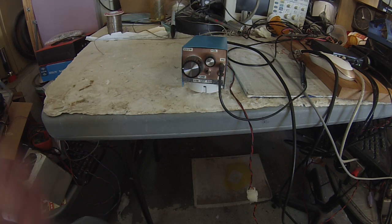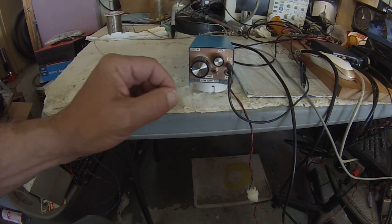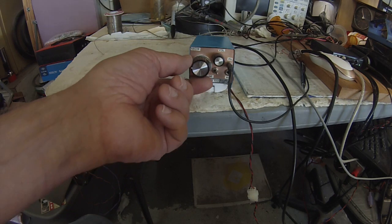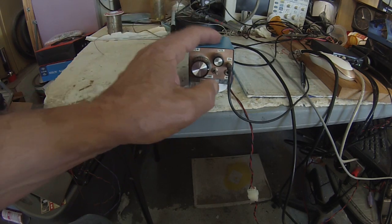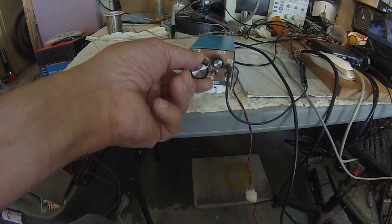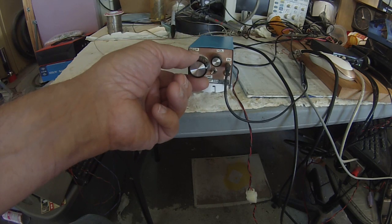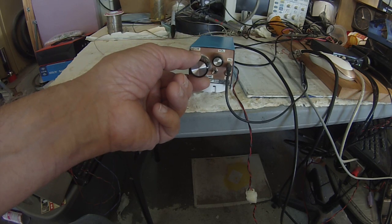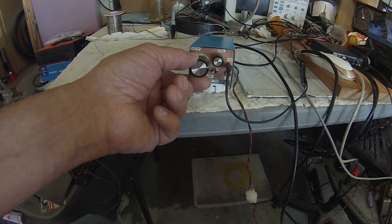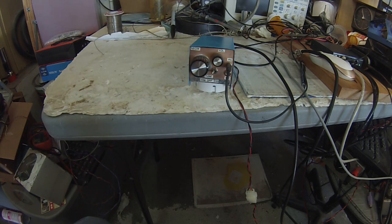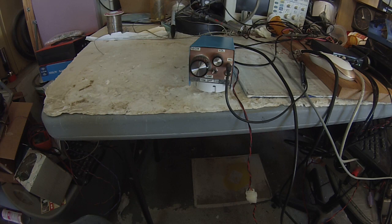N6QW here. Shirt pocket transceiver. This has the Plessy circuit in it. Homebrew 4 pole filter. ADE1 is the transmit mixer. ADE1 is the product detector.